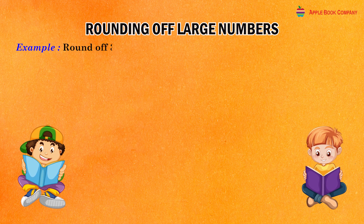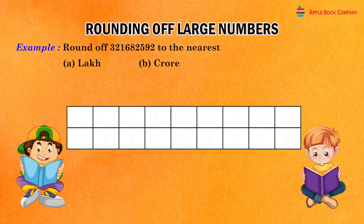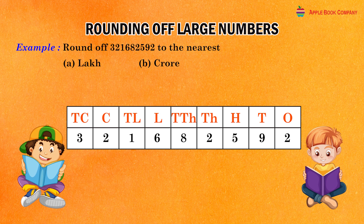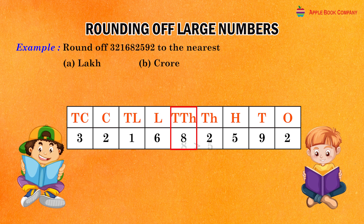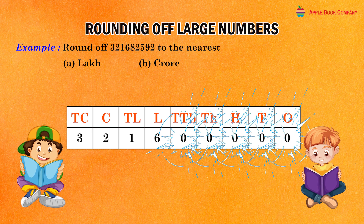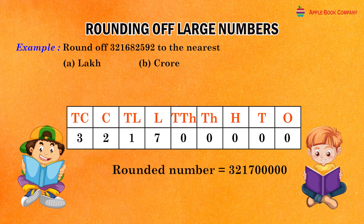Round off 32 crores, 16 lakhs, 82,592 to the nearest lakh. The number 32 crores, 16 lakhs, 82,592 is to be rounded to the nearest lakh. Here, the digit at the ten thousands place is 8 which is greater than 5. So, replace each of the digits at ten thousands, thousands, hundreds, tens and ones places by zero and increase the digit at the lakhs place by one. Rounded number is equal to 32 crores, 17 lakhs.